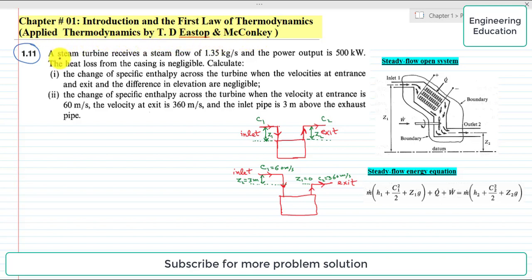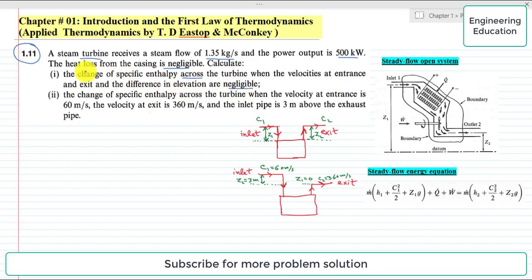The statement of the problem is: a steam turbine receives a steam flow of 1.35 kilogram per second and the power output is 500 kilowatt. The heat loss from the casing is negligible. Calculate: part one, the change of specific enthalpy across the turbine when the velocities at entrance and exit and the difference in elevation are negligible. Second part, the change of specific enthalpy across the turbine when the velocity at entrance is 60 meter per second and the velocity at exit is 360 meter per second.